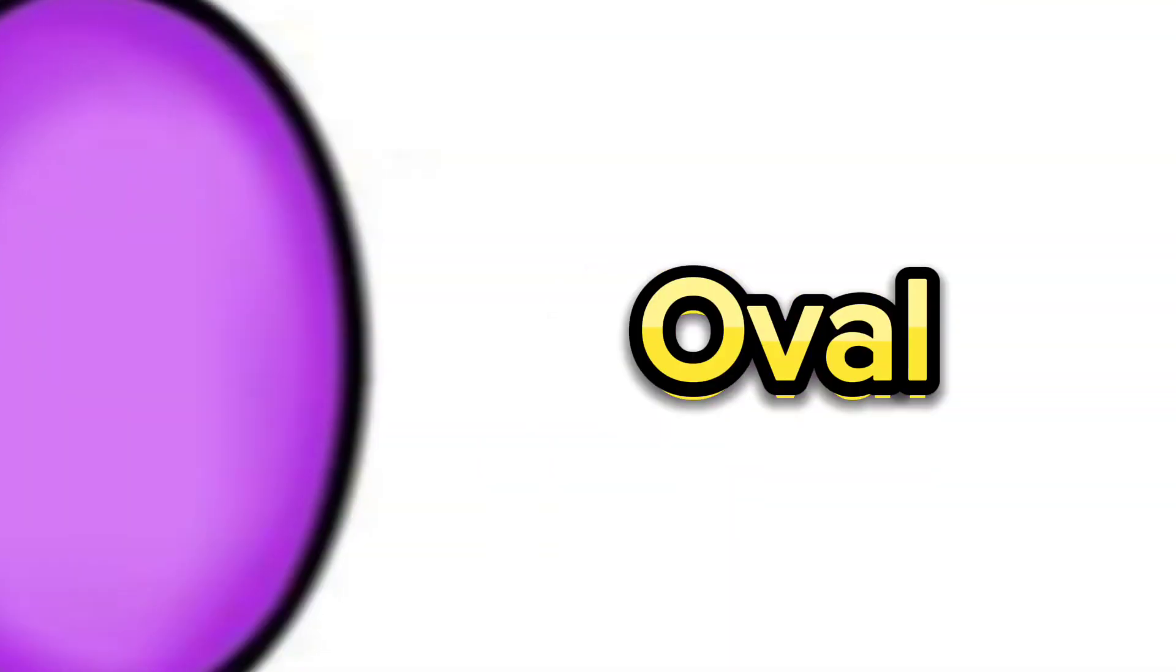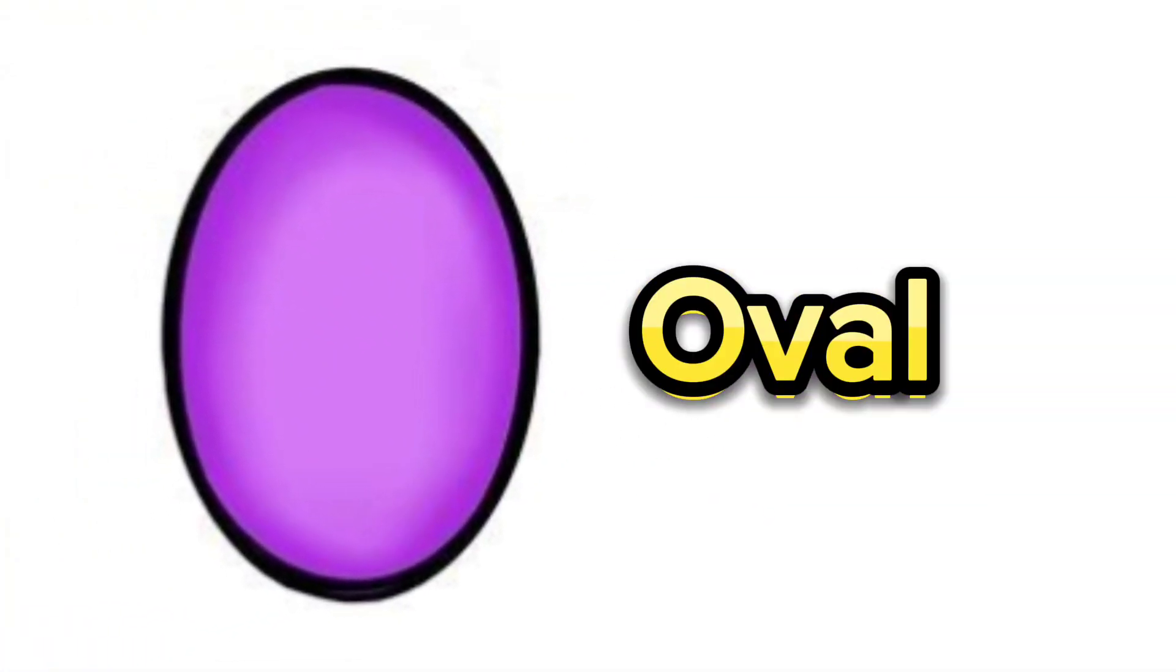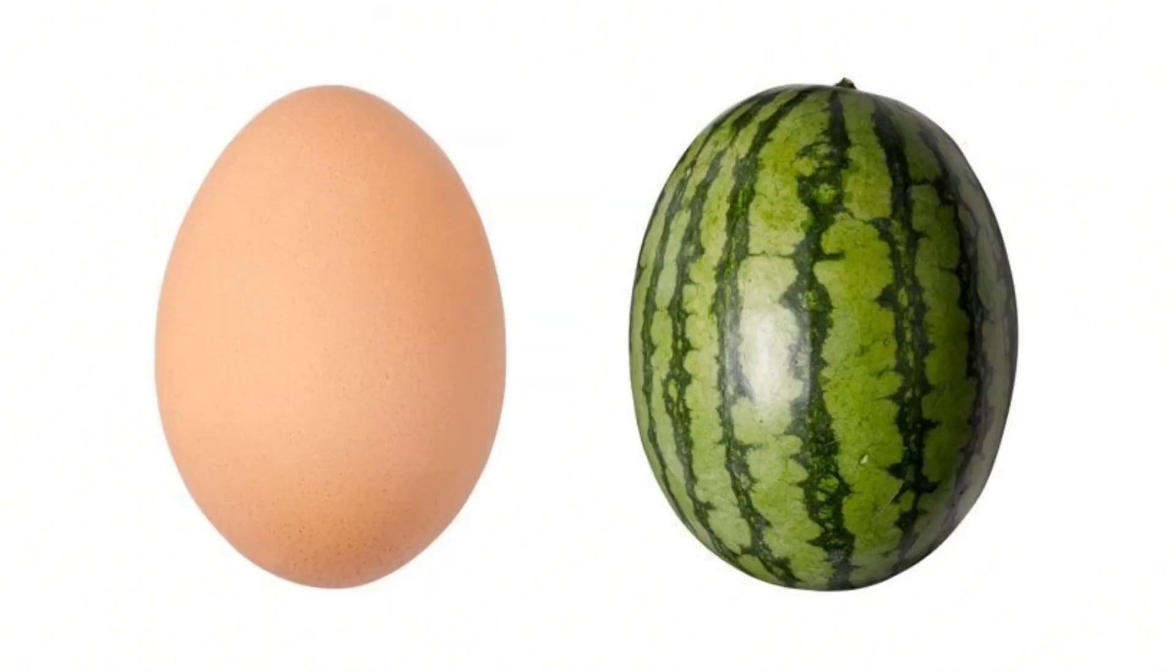Next is oval. An oval is a shape that is more of an elongated circle and looks like an egg. Examples of oval objects are egg and watermelon. Do you eat egg in your breakfast? Yes? It's very healthy. And do you like watermelon? Yes? It is very healthy too. So good job.